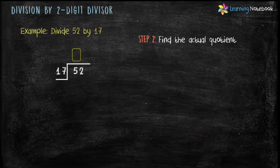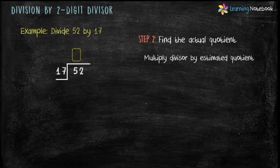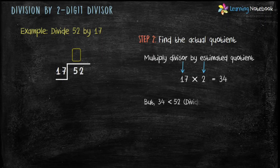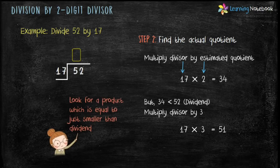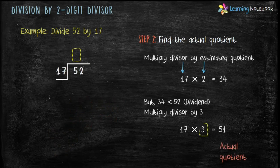Now step 2 is to find the actual quotient. Multiply divisor 17 by estimated quotient 2 and we get 34. But 34 is less than 52. So we will multiply the divisor by 3 this time. 17 into 3 equals 51. But again 51 is less than 52. We know if we multiply 17 by 4 we get a number greater than 52. We need the product equal to or just smaller than the dividend. Therefore 3 is the actual quotient.